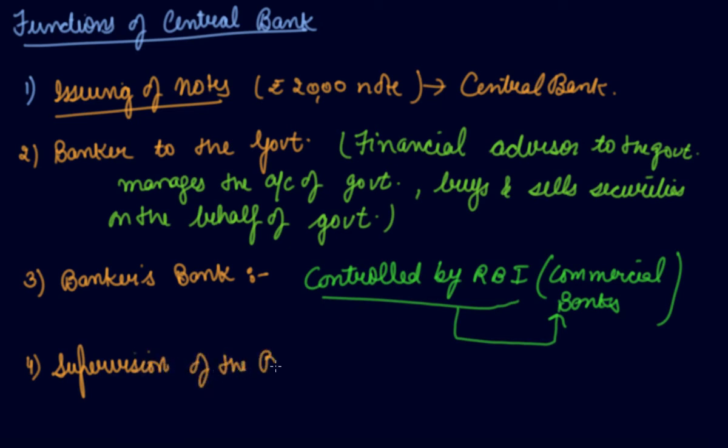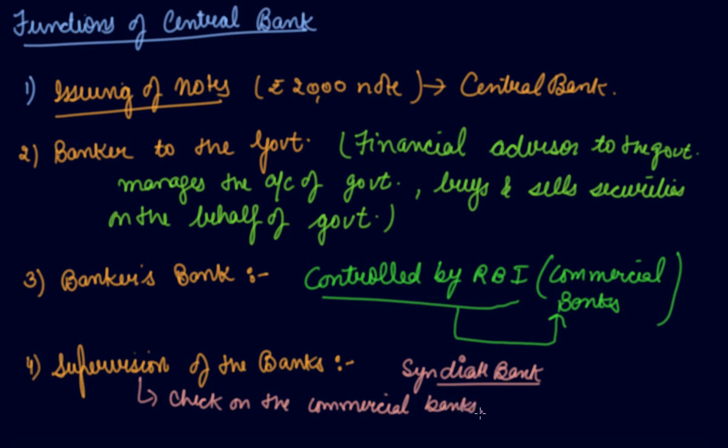Fourth is supervision of banks. We have heard about the scam of Syndicate Bank with fictitious assets. The central bank keeps check on commercial banks to ensure they are not taking illegal activities, are financially sound, and monitors their financial condition.